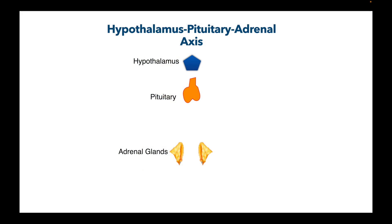The hypothalamus-pituitary-adrenal circuit is what we're talking about. Let me explain how the hypothalamus-pituitary-adrenal axis works. Here in blue we have the hypothalamus. It sends a signal to the pituitary gland called CRH, or corticotropin releasing hormone. That tells the pituitary gland to make something called ACTH, which is adrenocorticotropic hormone. That talks to the adrenal gland — the outer layer — and they then make the hormone called cortisol.